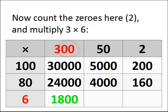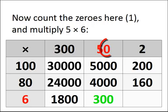Here you've got two zeros in the 300. Multiply three by six is 18. So you get 1,800. Count the zeros here. There's one in the 50. Multiply the five by the six is 30. So you get 30, followed by the one zero, 300.